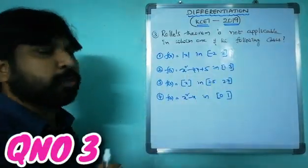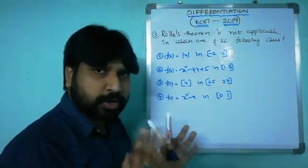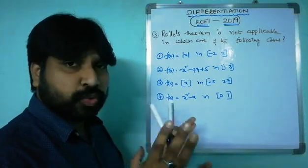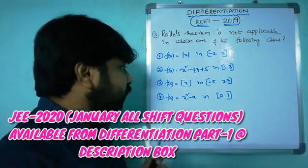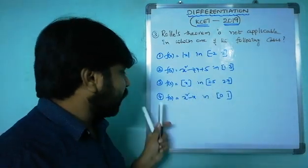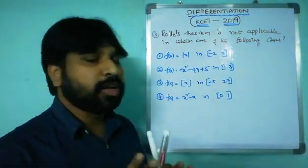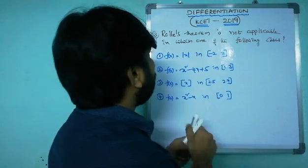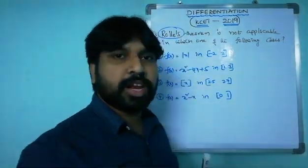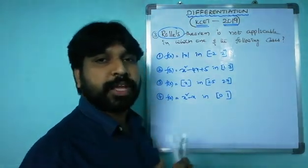Question three: Rolle's theorem is not applicable in which of the following cases? Option 1: f(x) = |x| on [-2, 2]. Option 2: f(x) = x² - 4x + 5 on [1, 3]. Option 3: f(x) = [x] (step function) on [2.5, 2.7]. Option 4: f(x) = x² - x on [0, 1]. To solve this, you need to know Rolle's theorem.